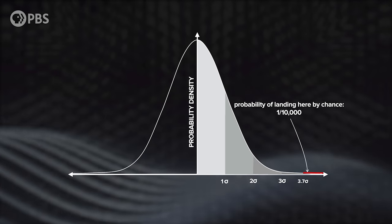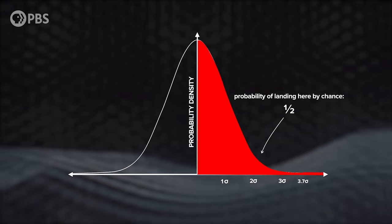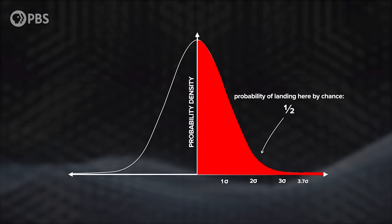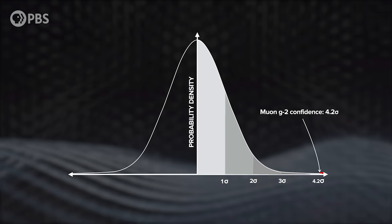So has the muon g-factor deviation gone away? No, no it hasn't. The muon g-factor team literally just announced their latest result, and the confidence is now at 4.2 sigma.